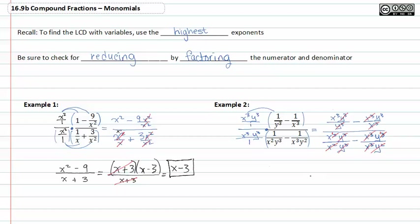So now I'm going to rewrite this, and it's very important to give yourself a lot of room to do these problems, because if you don't, it's really easy to get confused and lose your place. We have x to the third minus y to the third, all over x to the first, or just x minus y. Remember, be sure to check for reducing by factoring the numerator and the denominator.